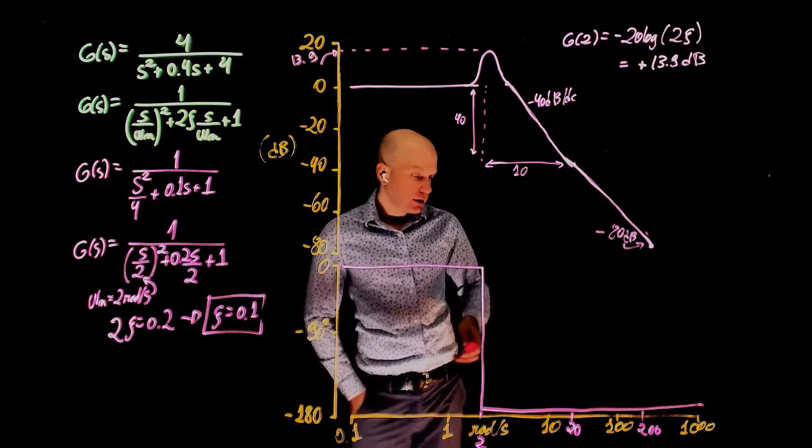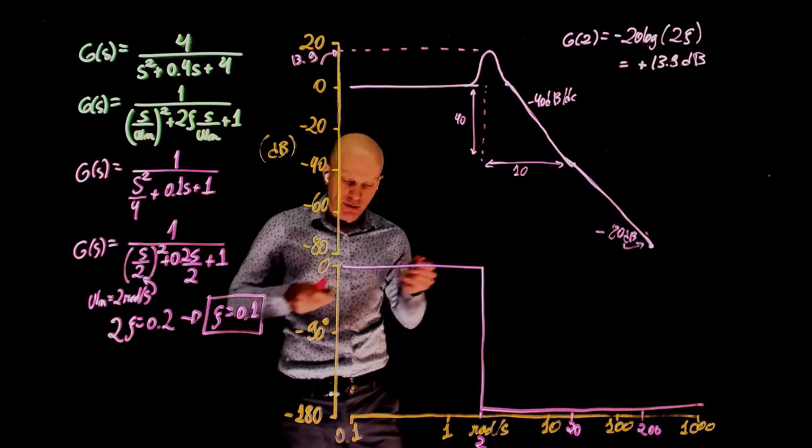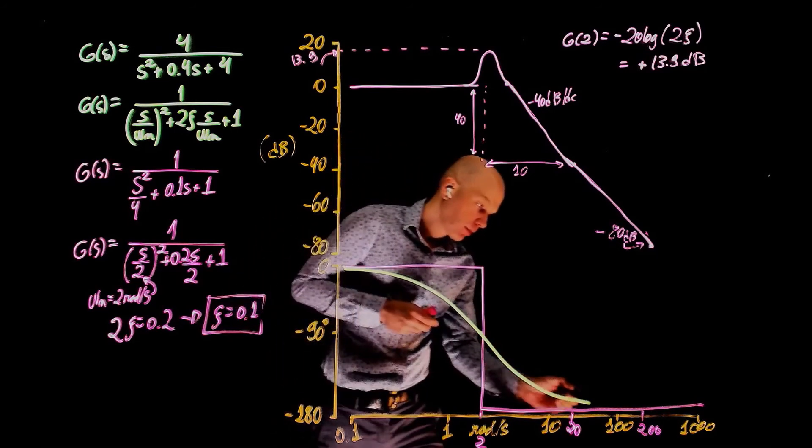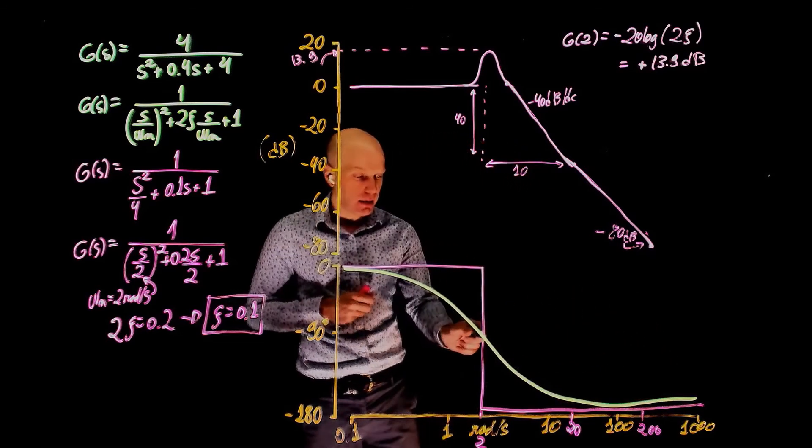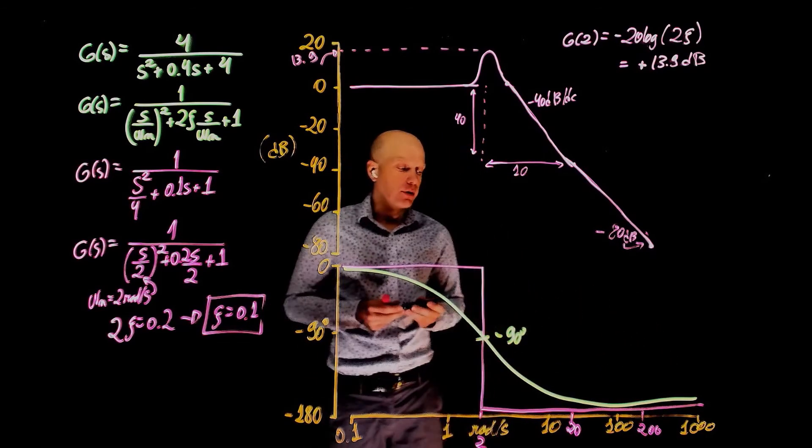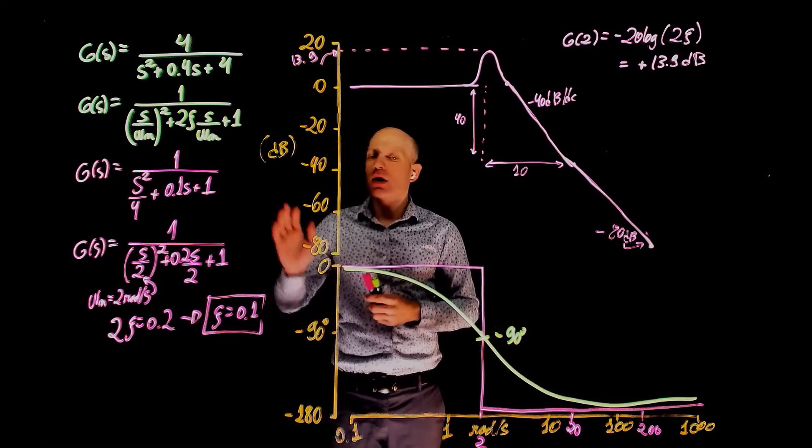Now we can interpolate this function to get a better idea of how the phase behaves. And you should see something like that passing by negative 90 degrees at the cutoff frequency. And this is now the phase. This is magnitude for this complex function.